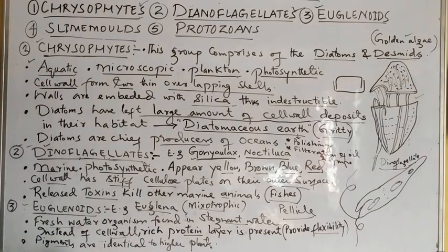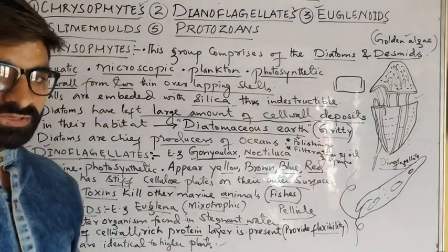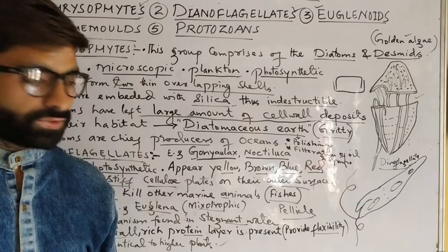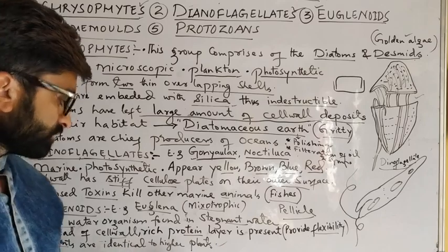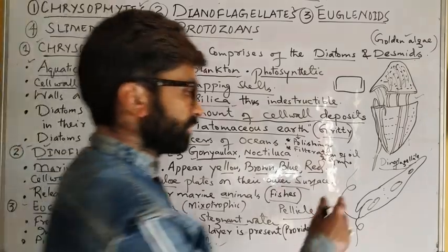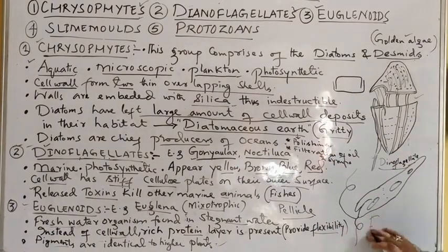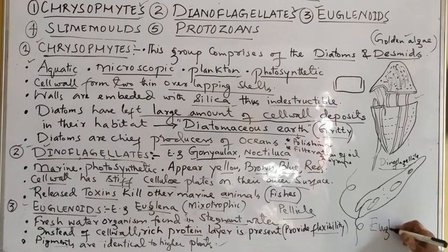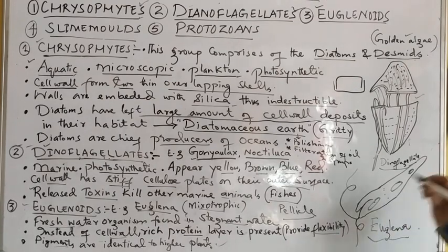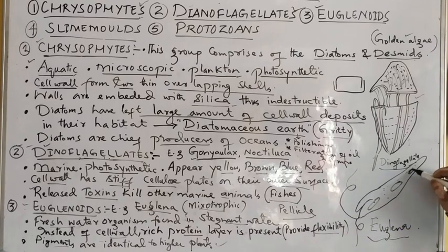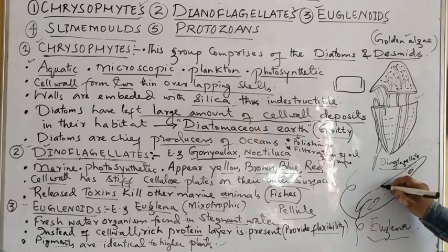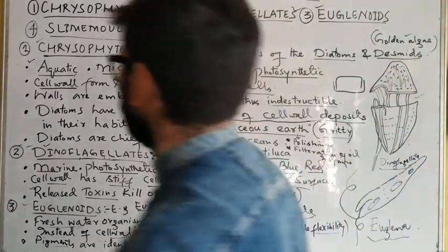The pigments in Euglena are identical to those in higher plants, and these pigments allow it to carry out autotrophic nutrition. I have drawn the Euglena structure according to the NCERT book. The outer covering is the pellicle, which is made of protein and is very flexible.